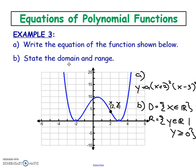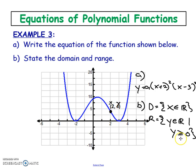The domain is going to be all real numbers because the graph keeps opening up wider and wider forever. The range looks like it only goes from 0 all the way upwards, so anything greater than or equal to 0.